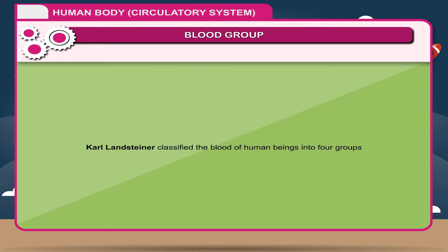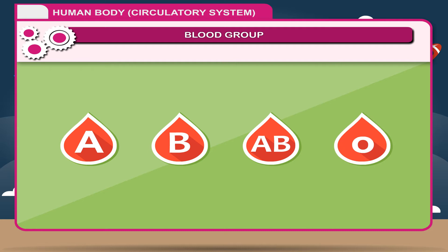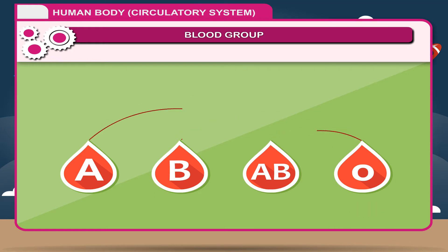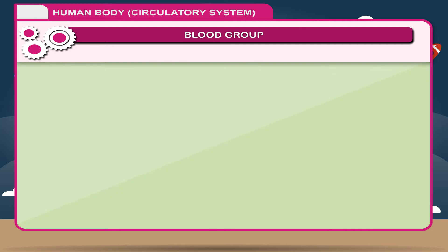Karl Landsteiner classified the blood of human beings into four groups: A, B, AB, and O. They produce different kinds of antigens on the surface of their red blood corpuscles. Persons having blood group O can donate their blood to all and are called universal donors. AB group persons are universal acceptors because they can receive blood from all. Each antigen produces one antibody in the blood. Antibodies are present in the serum of the blood.